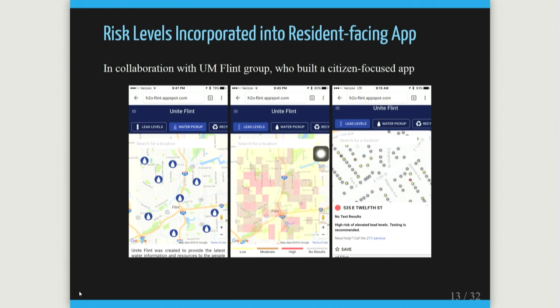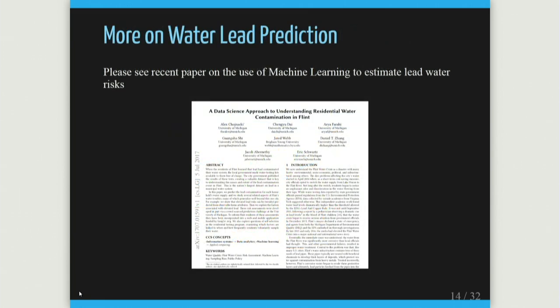Flint is a complicated place — it actually has the highest unoccupancy rate in the country. About a third of the homes in Flint are not occupied, which is very clear when you drive through the city.